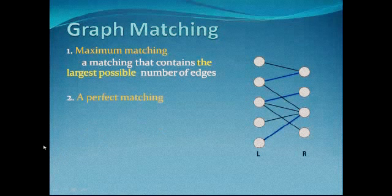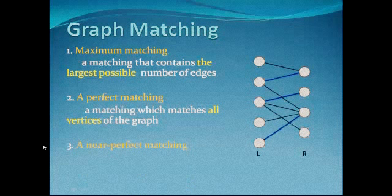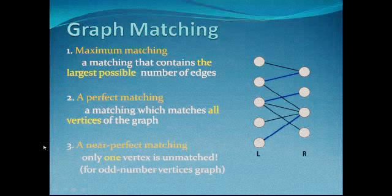A perfect matching is one that matches all vertices of the graph. You may wonder: what if the graph has an odd number of vertices? In that case, no two edges can share a common vertex and there will always be one unmatched vertex. To handle this, we introduce the concept of a near-perfect matching — defined only for graphs with an odd number of vertices — where exactly one vertex is unmatched and all others are matched.